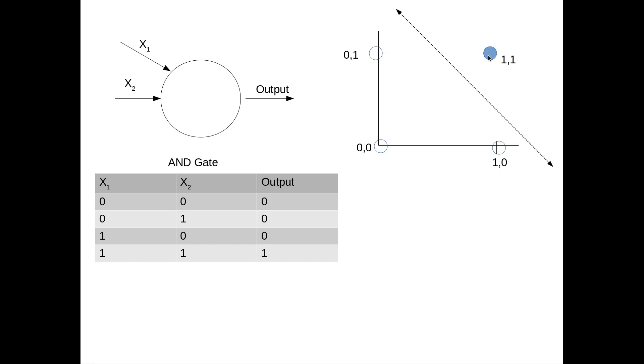I want you to notice that in this kind of model, this is something a perceptron can easily do. We can easily separate the points that are one from the points that are zero with a single line, a hyperplane. That means these two sets of outputs are linearly separable.